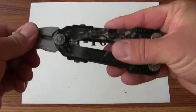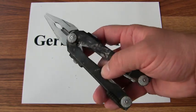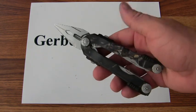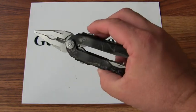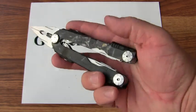You're looking at the Gerber Diesel Mossy Oak Camo. This is model number 22-41380. This is just like all the other diesels except it's got a mossy oak camo handle.